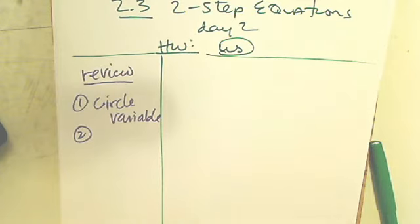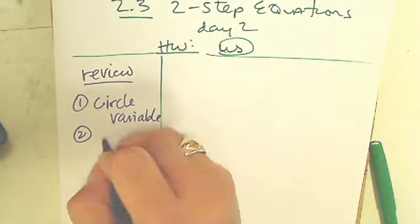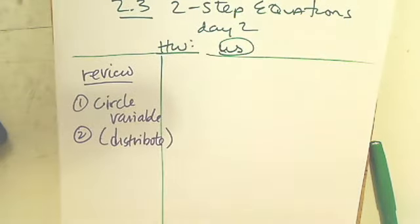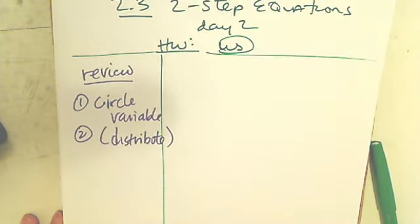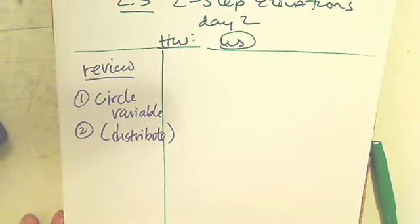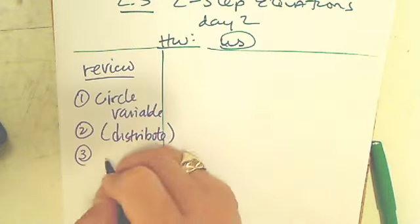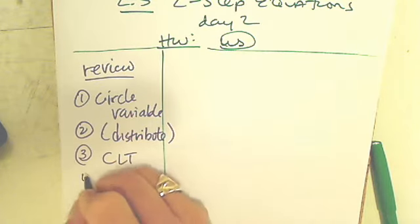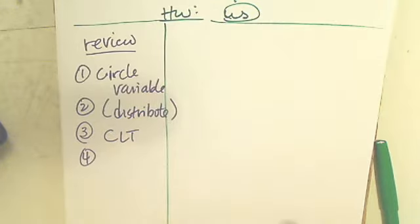Gabrielle. Distribute. Get rid of all parentheses. No parentheses allowed. Third step. Vasquez. By? Chicken, lettuce, tomato, or combine like terms. Sounds good. Combine like terms if you needed.